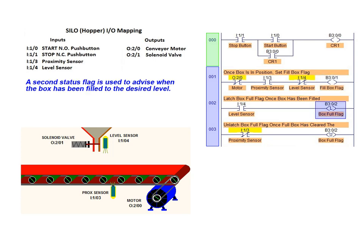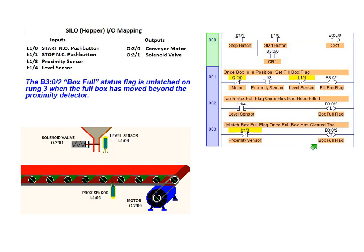A second status flag is used to advise when the box has been filled to the desired level. This status flag uses the bit file address B3 0.2. Rung 2 latches the B3 0.2 bit file status flag when the level sensor is triggered, indicating that a container has been filled to the desired level. The B3 0.2 full box status flag is unlatched on rung 3 when the full box moves beyond the proximity detector.